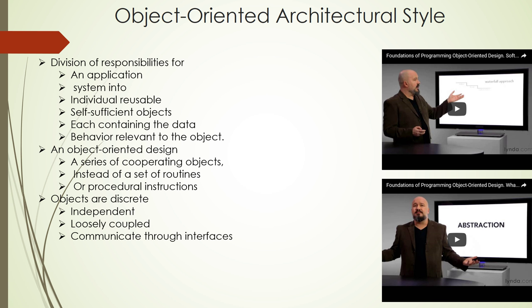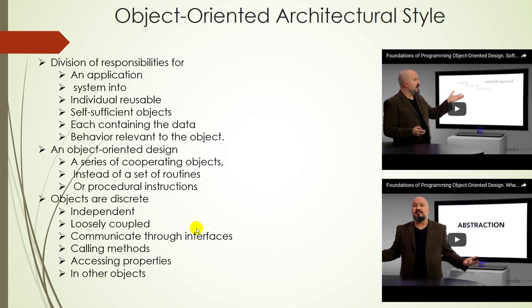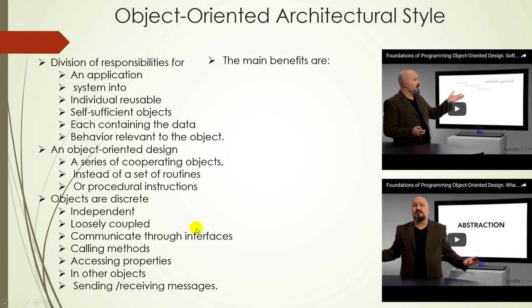Objects are discrete, independent, and loosely coupled. They communicate through interfaces by calling methods or accessing properties in other objects and by sending and receiving messages. The main benefit: objects are understandable — it maps the application more closely to the real-world objects, making it more understandable.